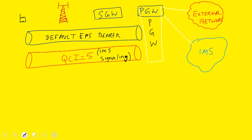When you power on your phone, assuming the network is VoLTE enabled and the UE is also VoLTE enabled, the default EPS bearer will be established first. Usually the default EPS bearer is QCI9, and after that the IMS signaling EPS bearer — which is QCI5 — will be established.